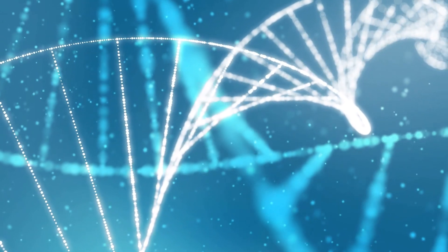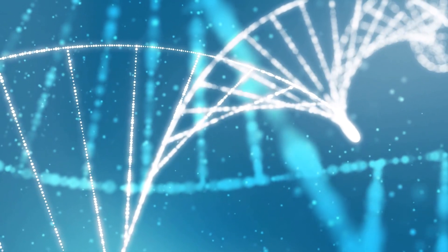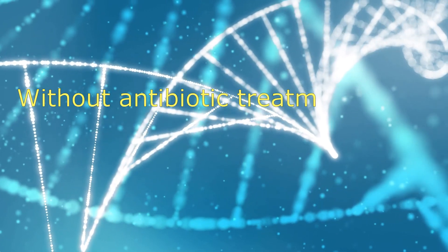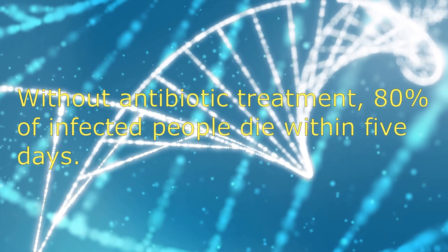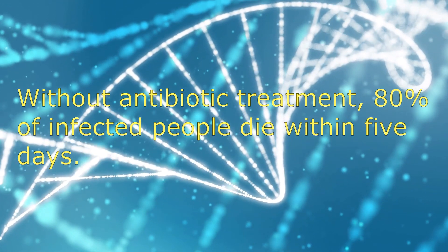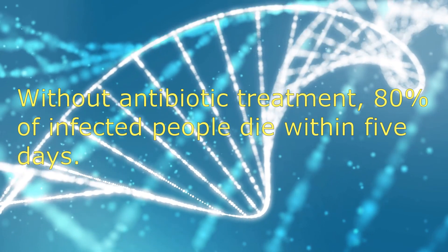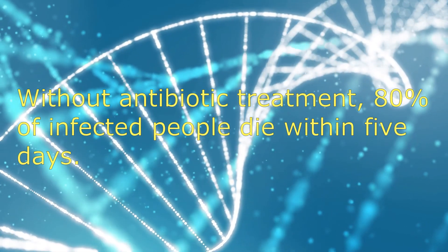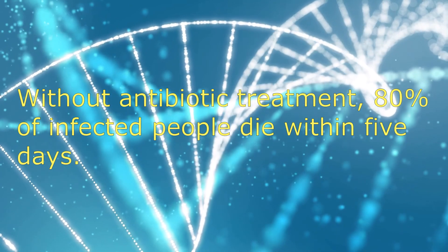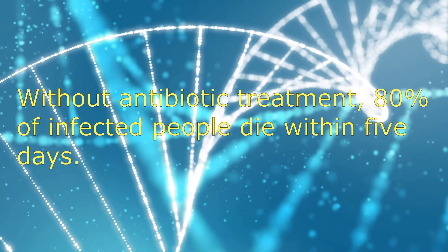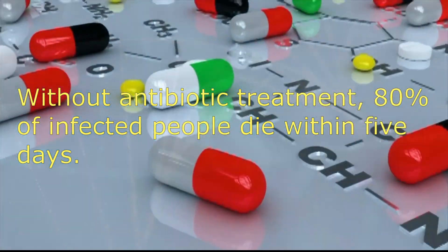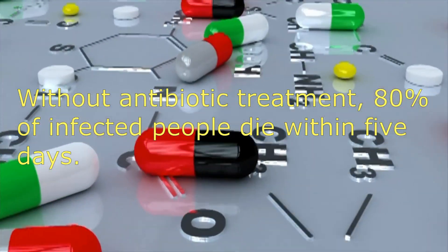Huge numbers of animals succumb to infection and die. Hungry fleas then turn to humans, and within three to five days of a bite, fever, headache, chills, and weakness develop. Lymph nodes closest to the bite site swell to form a painful bubo in the variant of plague known as bubonic plague.